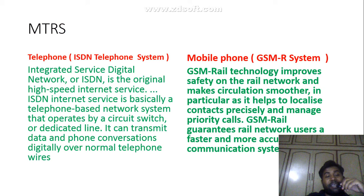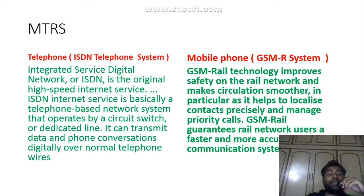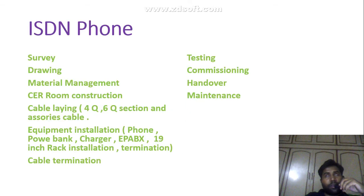In the MTRC system we also have the ISDN telephone system. ISDN means Integrated Services Digital Network. ISDN is the original high-speed internet service — a telephone-based network system that operates by circuit switching on a dedicated line. It can transmit data and phone conversations digitally over normal telephone wires.